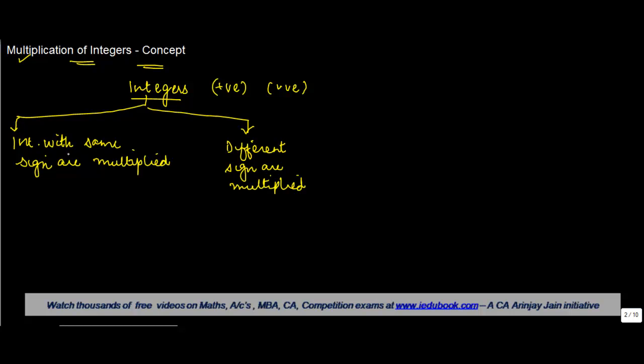When we say integers with same sign, what I mean is that a positive integer is multiplied by a positive integer, or a negative integer is multiplied by a negative integer. And when I say different, what I mean is that a positive is multiplied with a negative integer or a negative integer is multiplied with a positive integer.